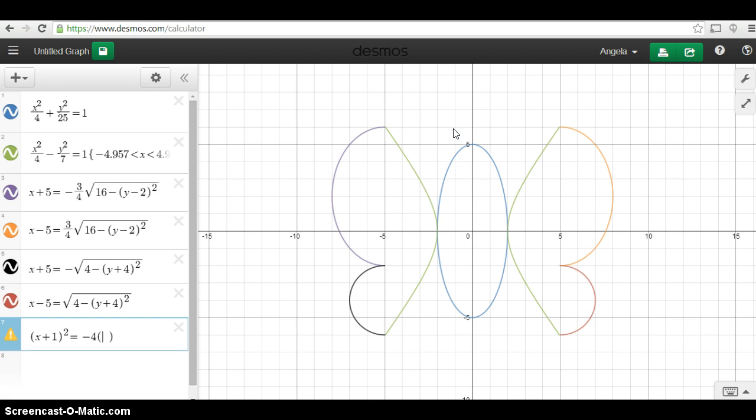So, plus 1 squared is equal to negative 4, I don't know, I'm just putting a random number there, 4y.